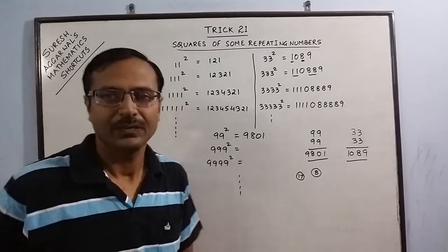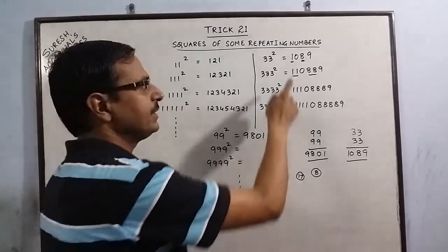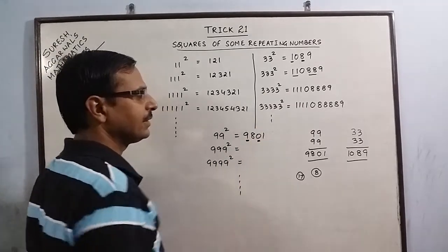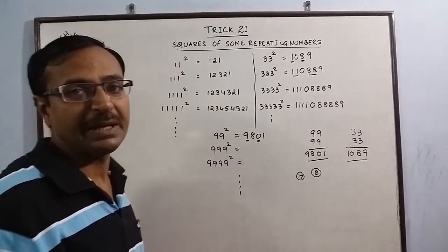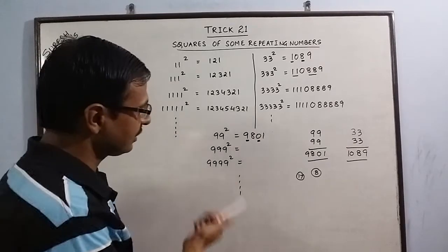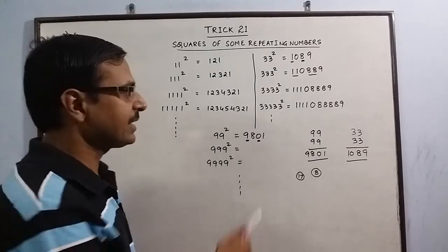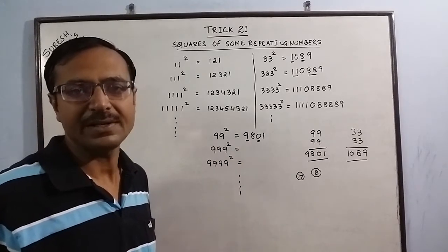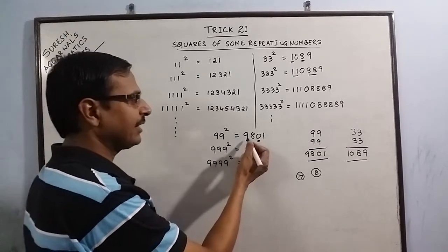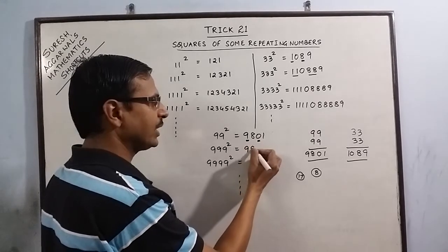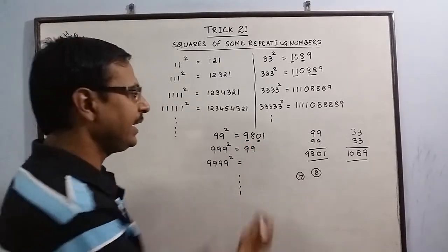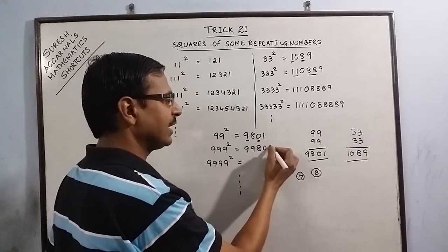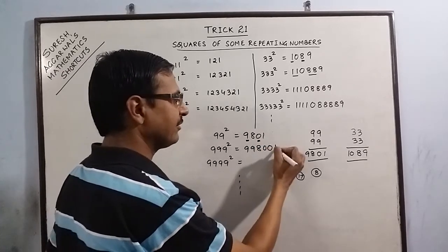Now the rule which we have applied here, same rule we will apply. The first and third digits will be increasing by 1 in each subsequent number, whereas 8 and 1 will retain their places as it is. So here we have 1 nine, here we will have 2 nines. 8 will be as it is. Here we have 1 zero, here we will have 2 zeros, and 1 will be as it is.